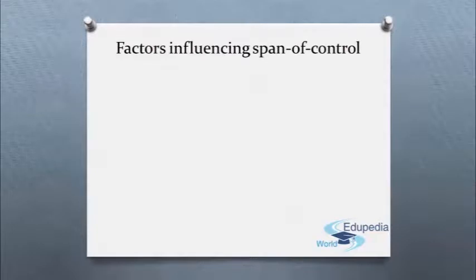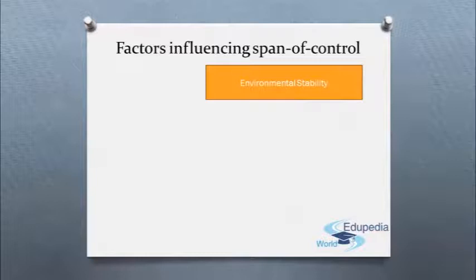Now coming to the factors influencing span of control. Environmental stability. When the external environment is more stable than dynamic, more employees can be supervised by a single manager. Stable environment is less demanding and reduces the need for a quick response, thereby providing more flexibility in time and schedules.